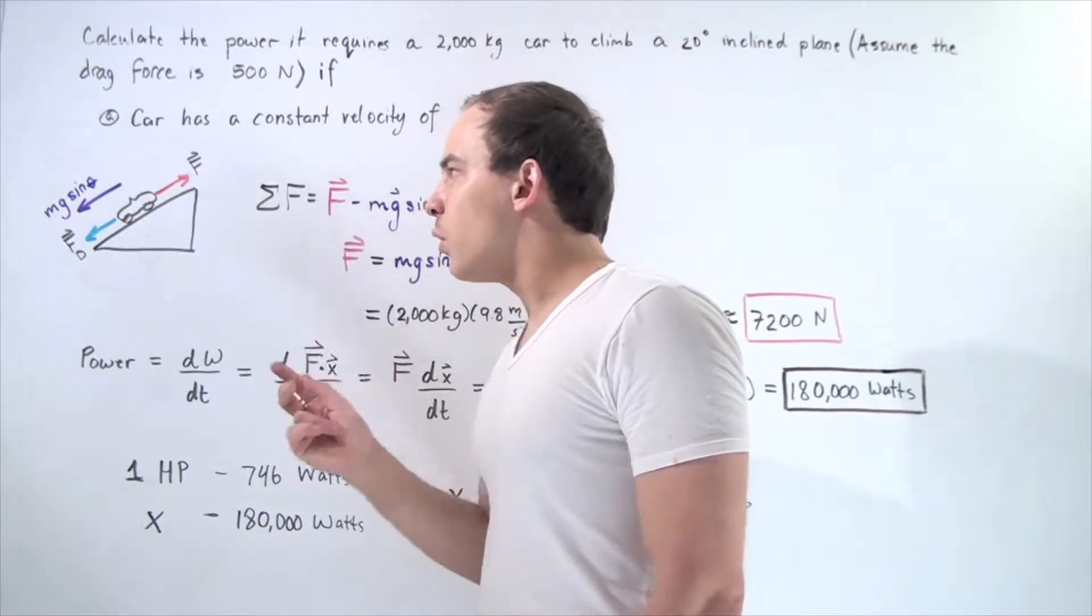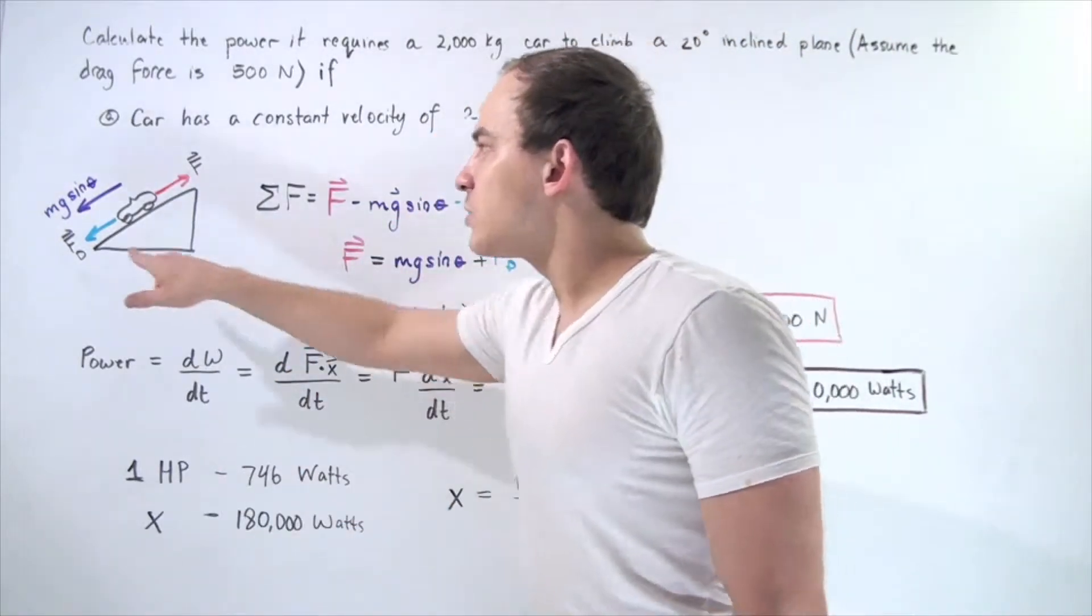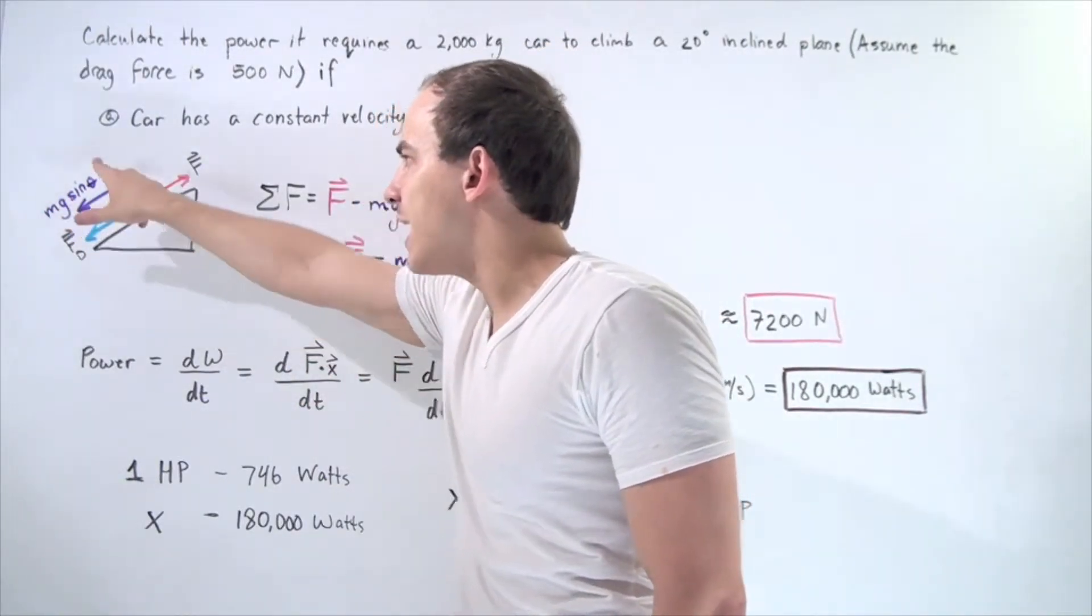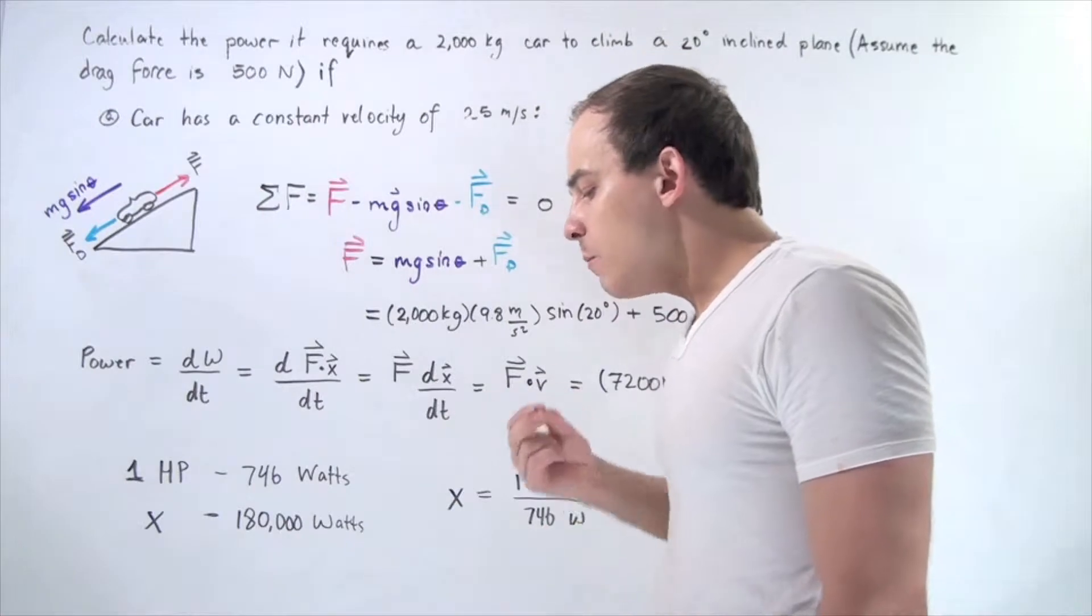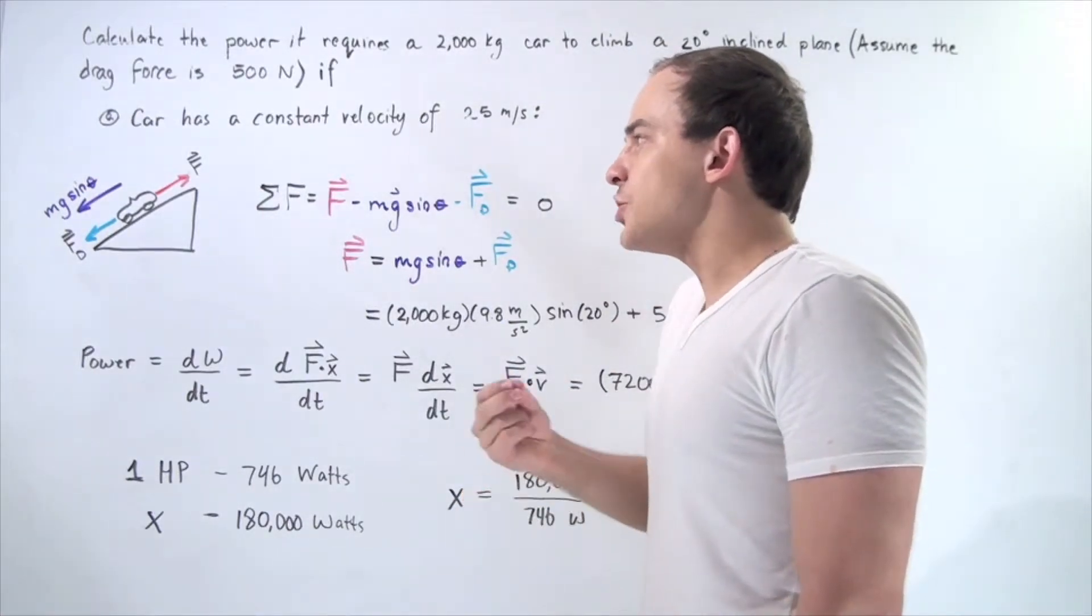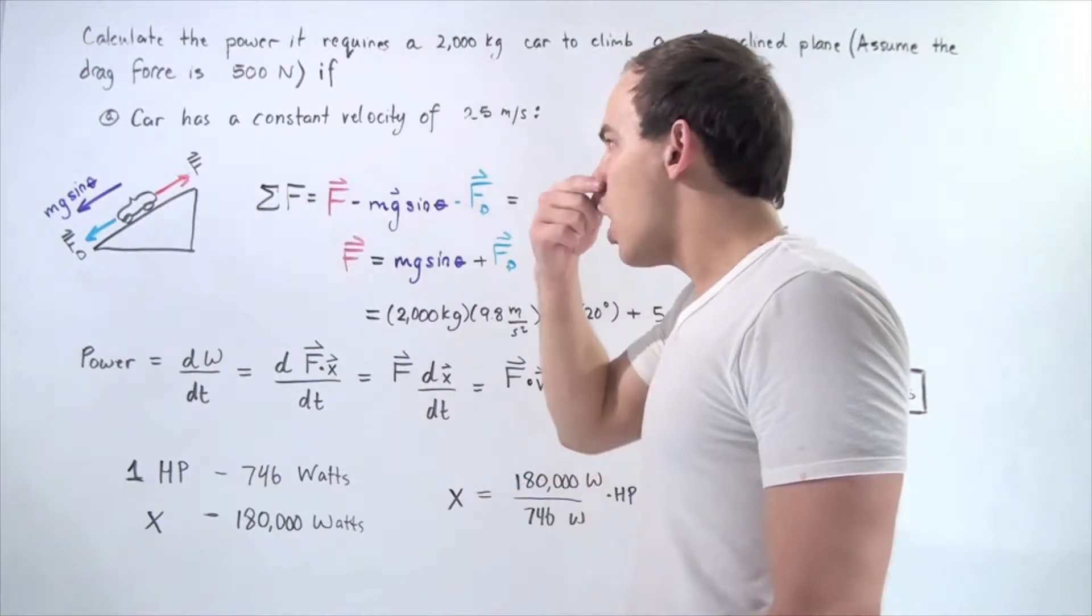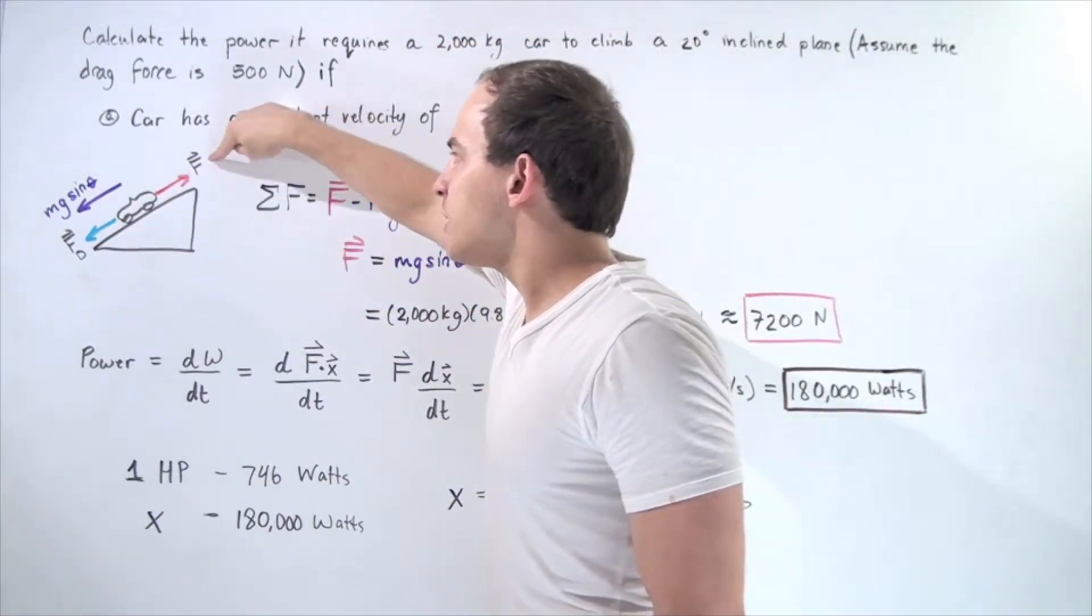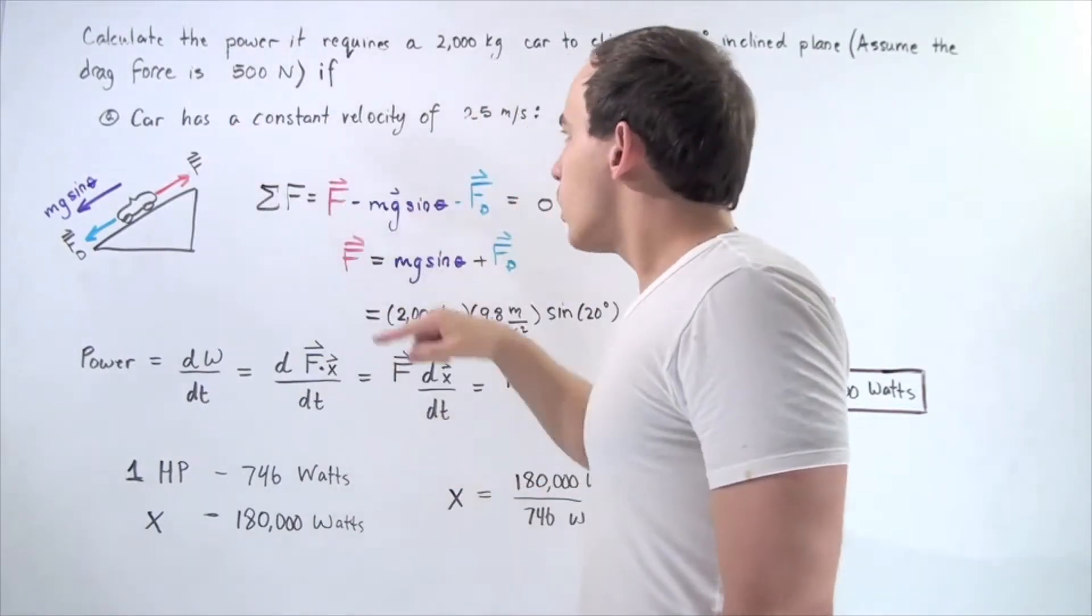We have two forces that point downward. We have the drag force and we have the force of gravity, mg sine of the angle theta. The upward force, which is the force due to friction created by the engine and the car, points upward. We want to calculate what this force is.